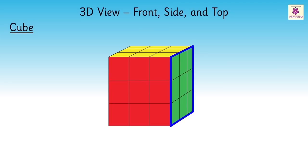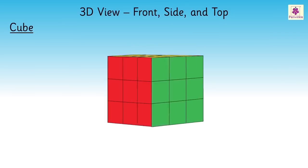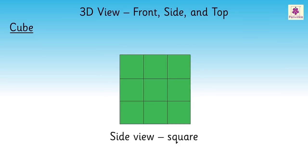The green colored face shows the side view. If we observe the side view, standing in front of it, it is also a square.